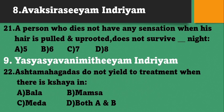Avakshirasiyam Indriyam: A person who does not have any sensation when his hair is pulled and uprooted does not survive which night? Options: 5, 6, 7, 8. He does not survive 6 nights. Option B. Ashtamahagadas do not yield to treatment when there is Kshaya in - Bala, Mamsa, Medha, or both A and B? Both A and B - Bala Mamsa Kshaya. Ashtamahagadas do not yield to treatment when there is Bala Mamsa Kshaya.